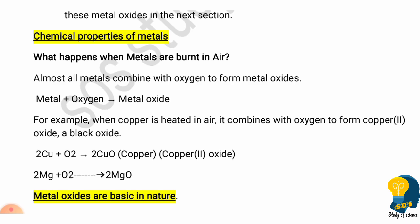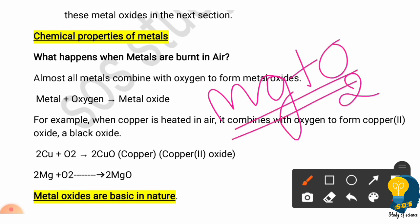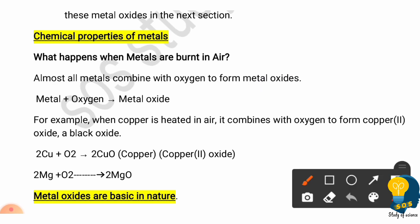Now let's talk about the chemical properties of metals. When a metal burns in the air, it combines with oxygen. Almost all metals, when burned, combine with the oxygen present in the air and form a metallic oxide.